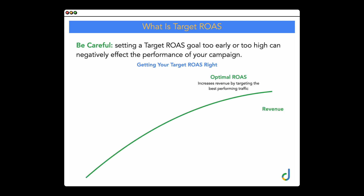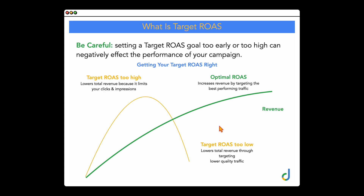The goal for setting a campaign bidding strategy is that you want Google to give you a higher level of revenue or a higher number of conversions—we want to see that green line always going up. If we set our target ROAS or target CPA too high, this actually has the effect of lowering the revenue or number of conversions you're achieving, because it limits your clicks and impressions. You have to train your account by feeding enough data into your campaigns.